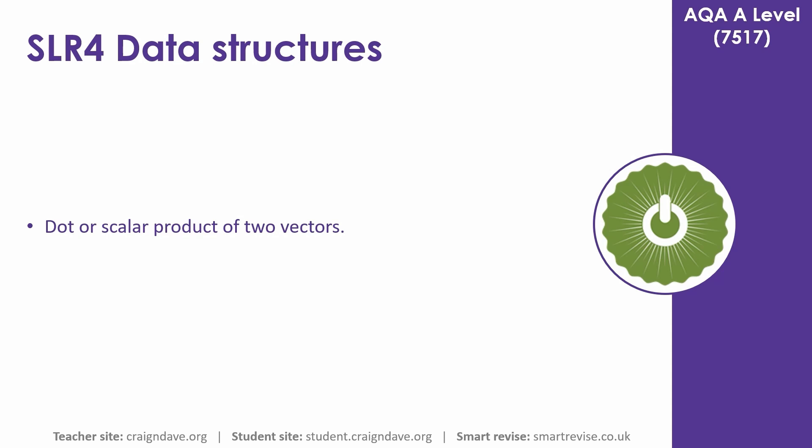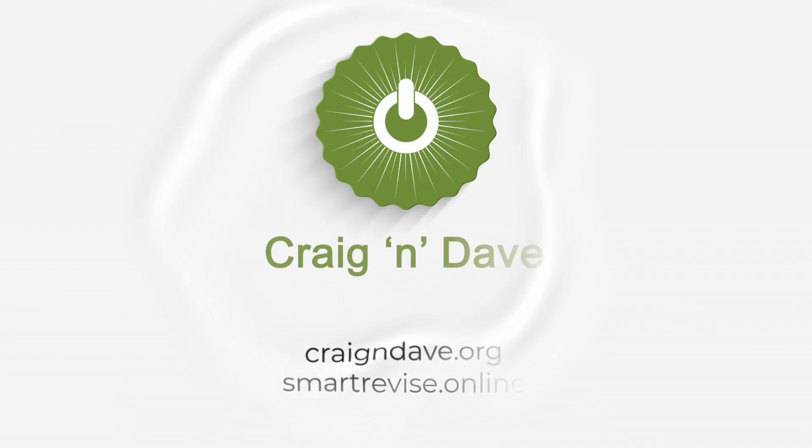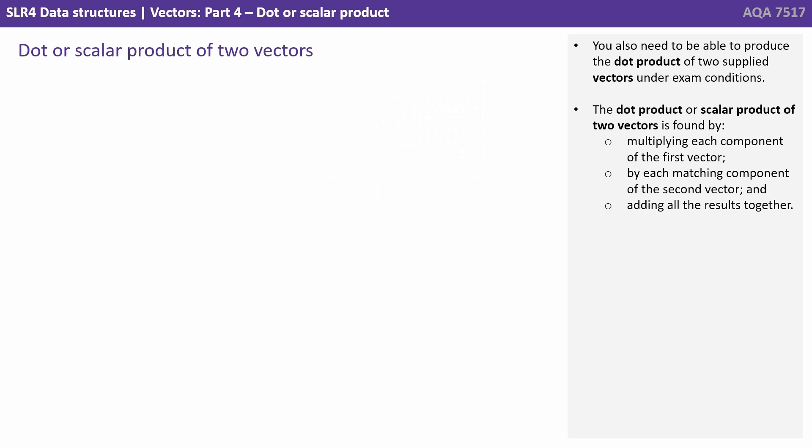This is our fourth video in a series of five on vectors. In this video we look at dot or scalar product of two vectors. You also need to be able to produce the dot product of two supplied vectors under exam conditions.